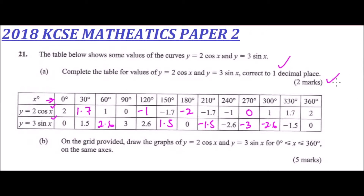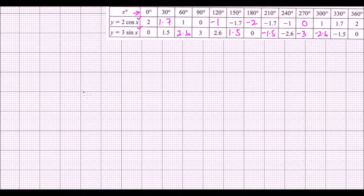We move to part B of the question. On the grid provided on your paper, draw the graphs of y = 2cos(x) and y = 3sin(x) for the range 0° ≤ x ≤ 360° on the same axes. If you can draw that, you earn yourself five marks, which is not very difficult. We are going to plot both functions and see what they look like.